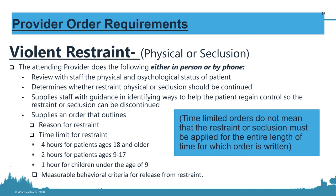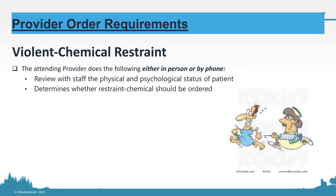The time limit for violent restraints is four hours for adults, two hours for ages nine to seventeen, and one hour for under age nine. When you start or continue restraints, you also have to specify what is required to discontinue them, since restraints must always be discontinued at the earliest opportunity. For chemical restraints, you only order once — the order does not renew, since the restraint is self-limited as the drug wears off.